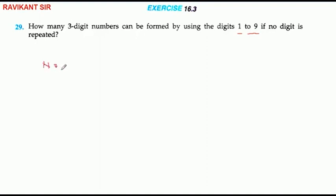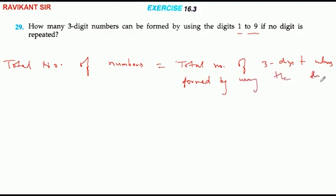The total number of numbers is equal to... This is the total number of three-digit numbers formed by using the digits 1 to 9.